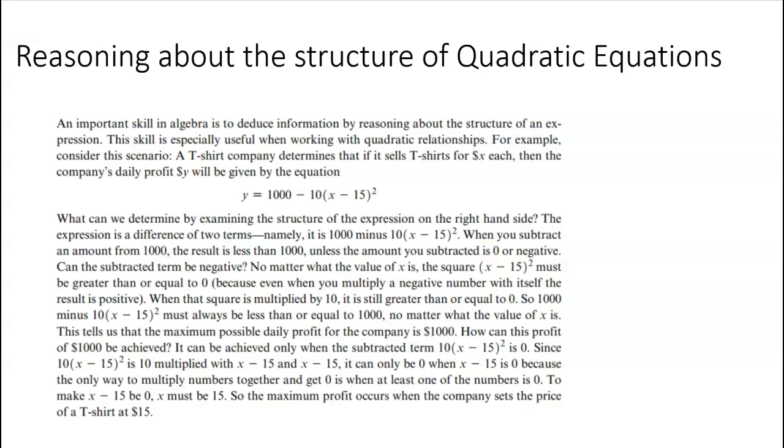So basically, when we look at this here, and we're going to do an example, but a t-shirt company determines if they sell t-shirts for x dollars each, then the company's profits y will be given by this equation here. What we can determine by examining the structure, the expression is the difference of two terms. So it's 1,000 minus this here. And when you subtract an amount from 1,000, the result will be less than 1,000. Well, that makes sense if we're subtracting, unless the amount is negative or zero.